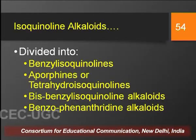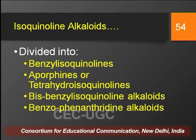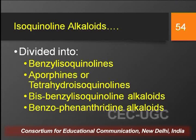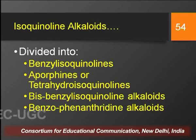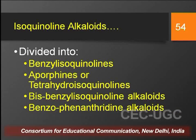Isoquinoline alkaloids are further divided into four categories based on their structure: benzyl isoquinolines, aporphines (also known as tetrahydroisoquinolines), bisbenzyl isoquinoline alkaloids, and benzophenanthridine alkaloids. These are the four major subclasses under the isoquinoline alkaloids.